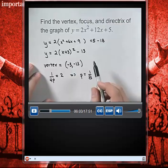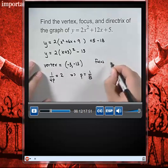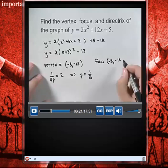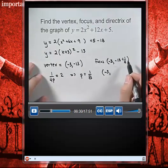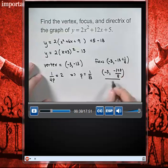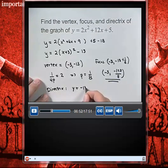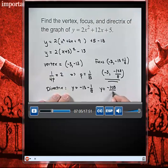To find the focus and directrix, we go to our y-value of negative 13 and move up 1 eighth. The focus is at (negative 3, negative 13 plus 1 eighth), which equals (negative 3, negative 103 over 8). The directrix is found by taking y equals negative 13 minus 1 eighth, giving the equation y equals negative 105 over 8.